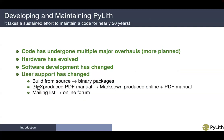User support has also changed. Originally, PyLith was built from source and every user had to build the code on their own computer. Now we provide binary packages and Docker containers for development. The manual was generated using LaTeX to create a PDF file. Now we use Markdown and Sphinx to produce an online electronic publication as well as PDF versions of the manual. Interaction with users was done almost exclusively through a mailing list, and now we have a searchable online forum.